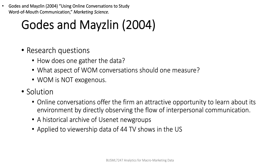So this article addresses the following research questions: How to gather the data of word of mouth? And what aspect of word of mouth conversations should be measured? The article addresses these questions with consideration of the endogeneity of word of mouth. They suggest online conversations as a proxy of word of mouth. To show it works, they collected a historical archive of user conversations in Usenet newsgroups and applied the data to TV show viewership in the United States.